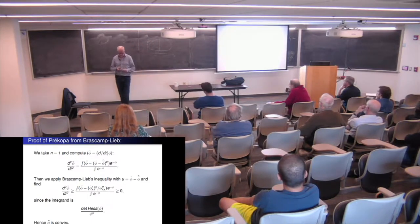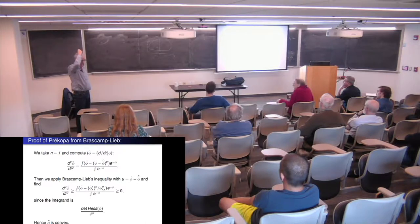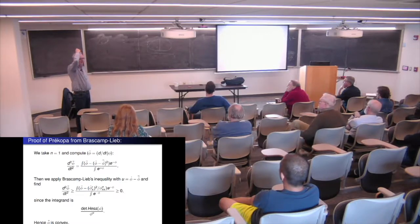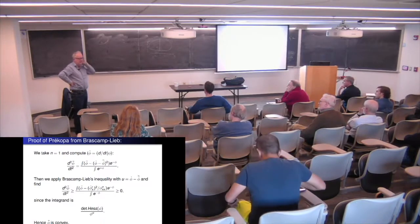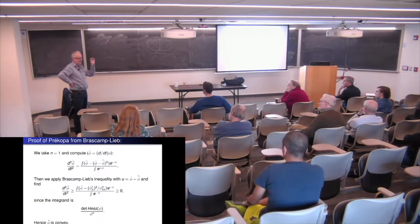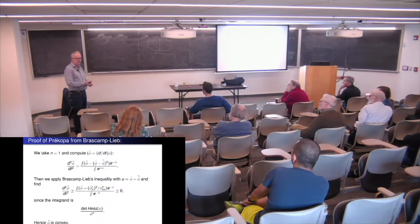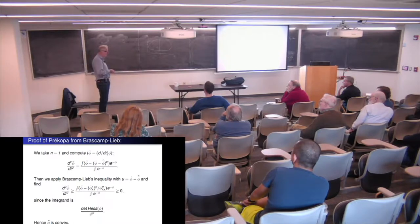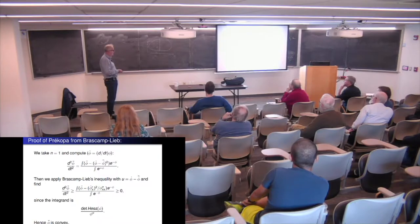That's a neat proof once you have the Brascamp-Lieb inequality, which was really discovered after Hörmander's L^2 estimate for D-bar. The first avatar of Hörmander's L^2 estimate was the Kodaira vanishing theorem on compact manifolds, then domains in C^n, and finally the real case of Brascamp-Lieb. It's the opposite of the usual road — from more difficult to simpler situations.